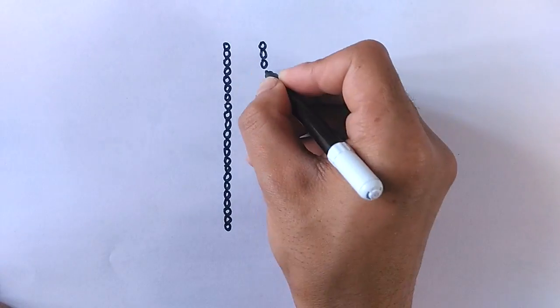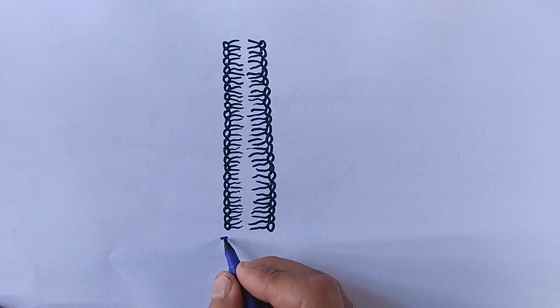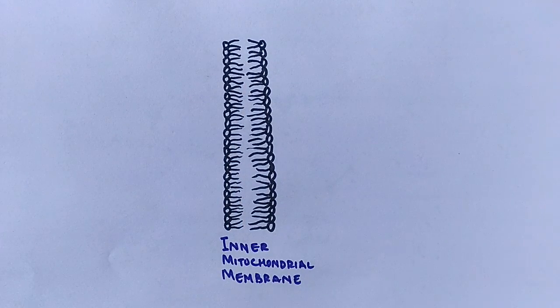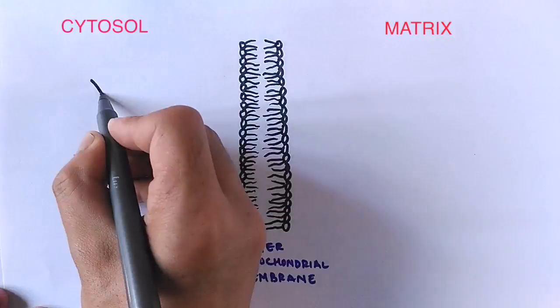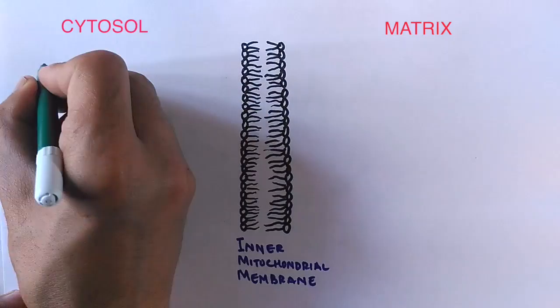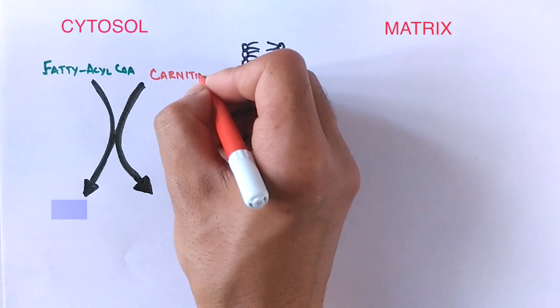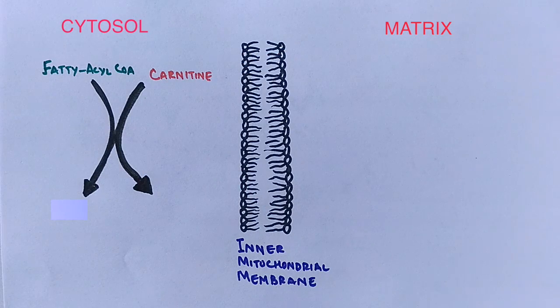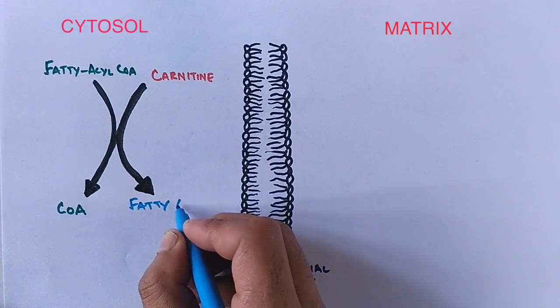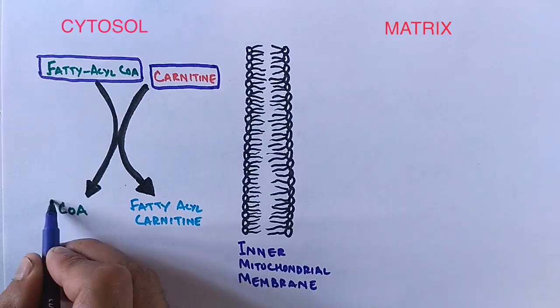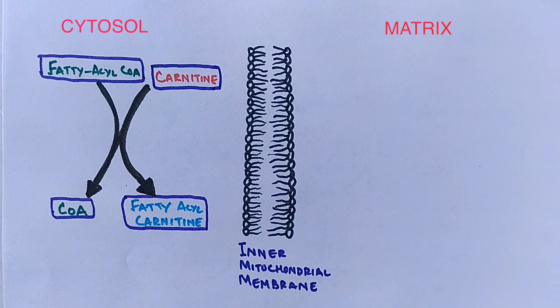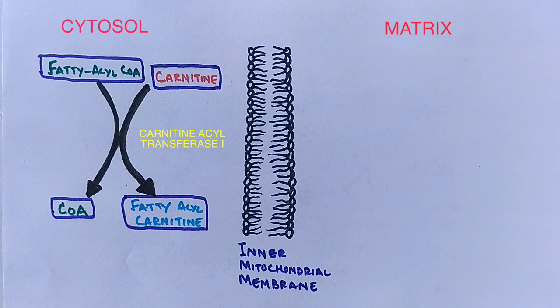Now let's see in detail how this carnitine shuttle works. We have a barrier in the form of the inner mitochondrial membrane between the cytosol and the mitochondrial matrix. On the left we have the cytosol and on the right we have the mitochondrial matrix. The first part of the reaction occurs in the cytosol, between fatty acyl-CoA and carnitine. These two molecules react together and give off two different molecules: coenzyme A and fatty acyl carnitine — that's the fatty acyl group combined with the carnitine molecule. This reaction is catalyzed by the enzyme carnitine acyl transferase 1.